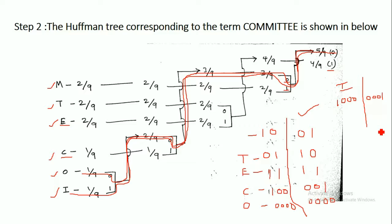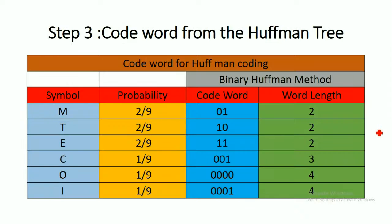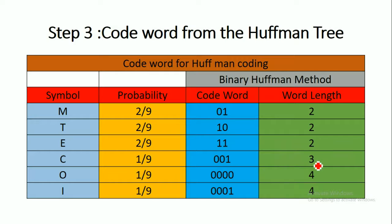So the code words for the symbols M, T, E, C, O, I are: 01, 10, 11, 001, 0000, and 0001 respectively. The corresponding code word lengths are 2, 2, 2, 3, 4, and 4.